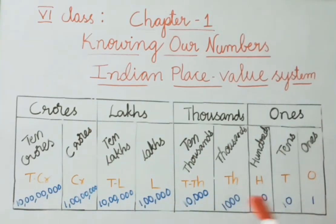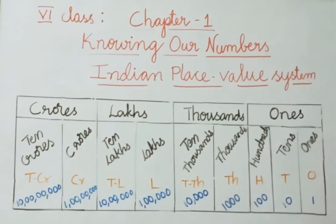Overall, we have written 9 numbers here. By using this Indian place value system, we are going to learn number names and expanded form.